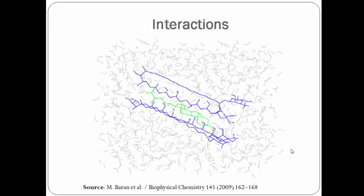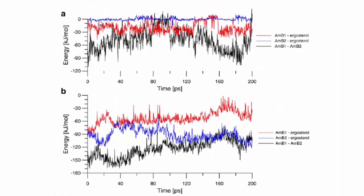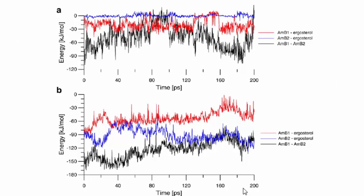As shown using bioinformatics tools, the van der Waals and electrostatic interactions were analyzed. The Amphotericin B–ergosterol interaction is at a higher energy level compared to the Amphotericin B–Amphotericin B interaction, which has lower energy. The lesser the energy, the higher the bond strength and the greater the interaction.